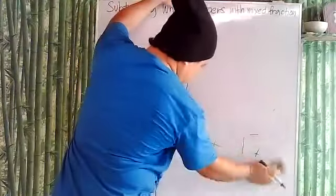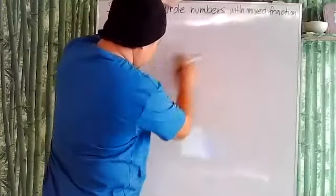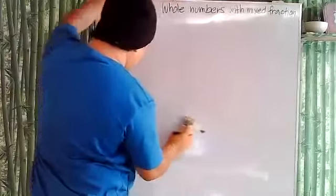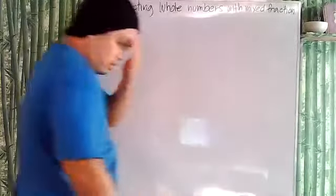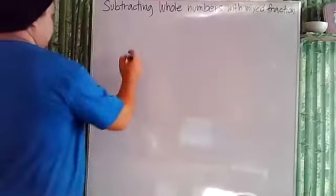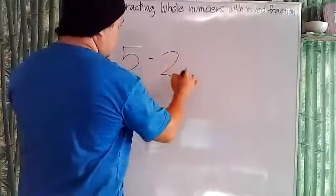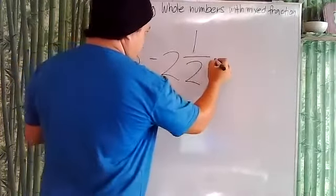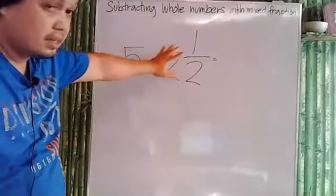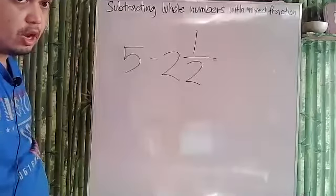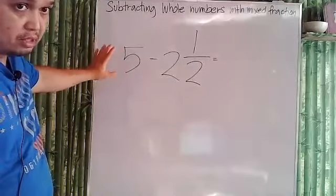Just remember when subtracting a whole number with a mixed fraction, change the whole number into a mixed fraction so you can subtract. Let's look at another example: five minus two and one-half.